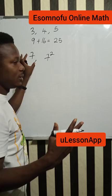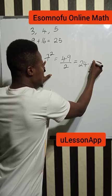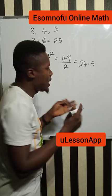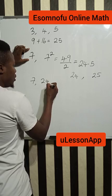If you square seven, that will give you 49. Divide 49 by two. If you divide 49 by two, it will give you 24.5. You will understand that 24.5 is lying between 24 and 25. Therefore, the Pythagorean triple we can get from seven will be 7, 24, 25.